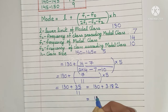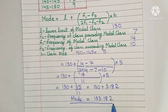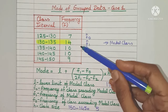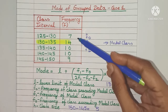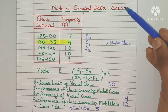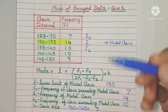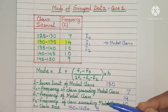So the value of mode is 133.182. Now in this case the modal class was in between two class intervals — this is Case 1. But we can have a case where the modal class is the first or the last class, so let's quickly go through those cases.